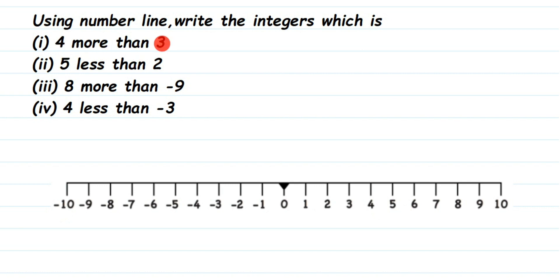The first question is four more than three. I'm going to locate three on the number line first — three is here. To this, four more means I have to go four units to the right side, because 'more' means we add and move right. So counting: one, two, three, four — we reach seven. So four more than three is seven.